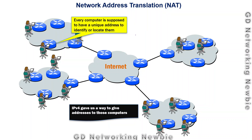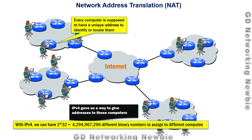IPv4 gave us a way to assign different IP addresses to computers. Using 32 bits, we can have approximately 4 billion different IP addresses. But in the 1990s, it was realized that these many IP addresses are not sufficient for all the computers around the world.